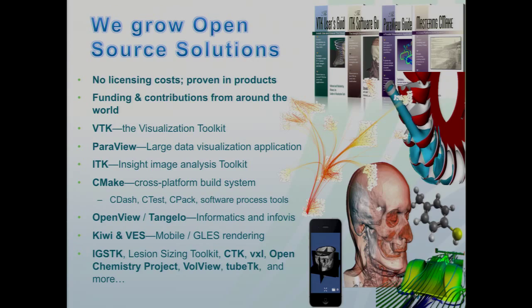Some of the things we're known for: VTK is the Visualization Toolkit — a software library you can use to write applications. It's very good for scientific visualization and post-processing of data. ParaView is a front end for VTK. We're also involved in ITK, CMake, Tangelo, and a few other things, all of which we're trying to grow in this model.